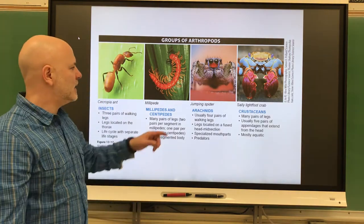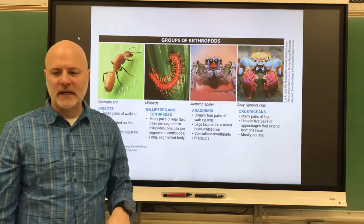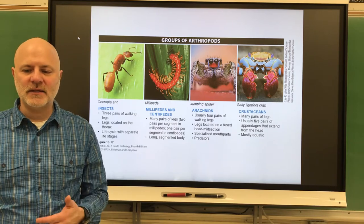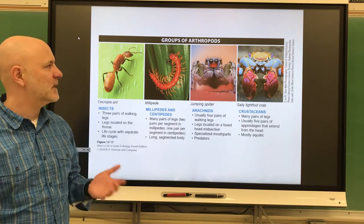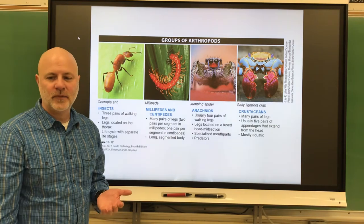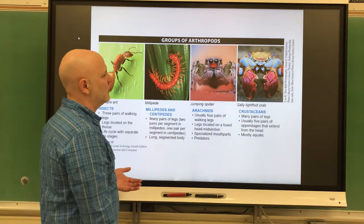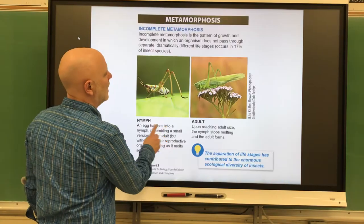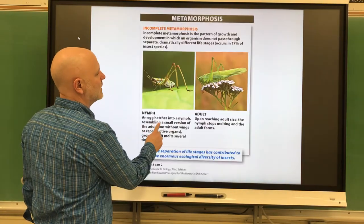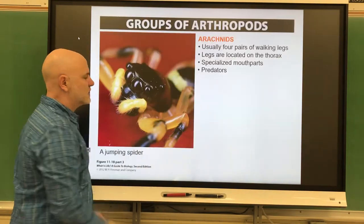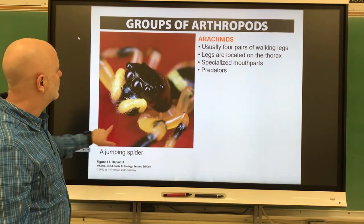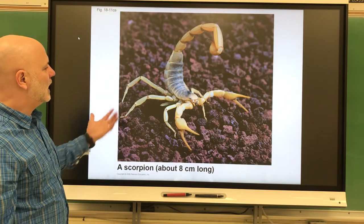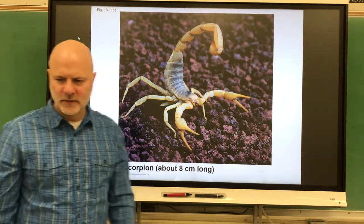Next are arachnids — spiders and scorpions. These have four pairs of walking legs, again located on the thorax, and they have specialized mouthparts for predation. This is showing a cute little jumping spider — I'm a big fan of jumping spiders. Here's another jumping spider. And not so cute: a black widow. Here's a scorpion.